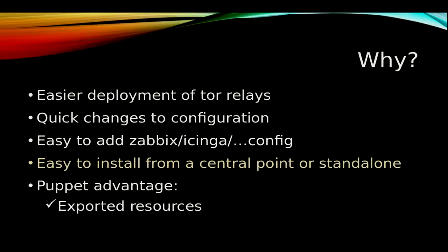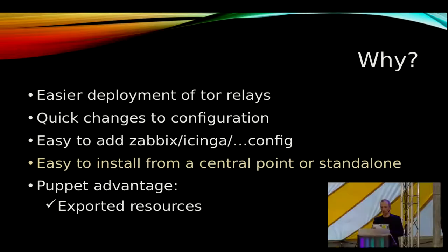Puppet has two ways of installing systems: a central point and a standalone. The central point allows installation from a master. You have one or multiple master servers and many slaves with a Puppet agent installed. Those slaves connect to the master and ask for code based on their hostname, role, or location. The master responds with the appropriate code. For example, if you give one server an exit node role, the master gives it the configuration items for an exit node. This allows easy management of Tor-related services from a central point.